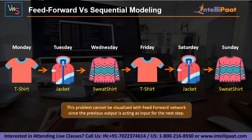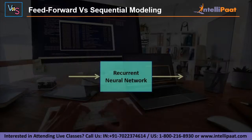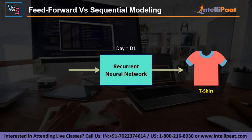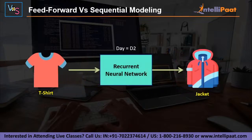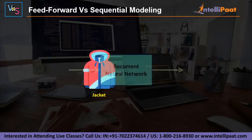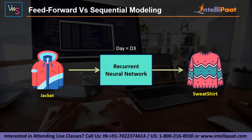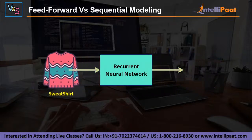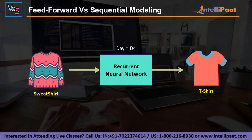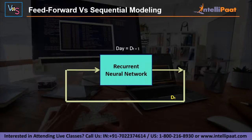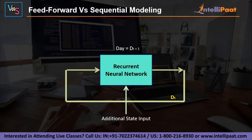Let's figure out the architecture that could model this type of sequential data. The t-shirt is the output for day one, and this output is passed as an input to the model again. When t-shirt is entered as input, it gets mapped into a jacket. When jacket is fed to the network, it gets mapped into a sweatshirt. When sweatshirt is fed to the network, it gets mapped into a t-shirt, and so on. In a basic time representation, for day d(t+1), the previous day's output d(t) is fed into the network as input.